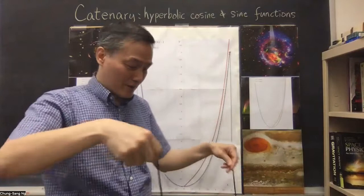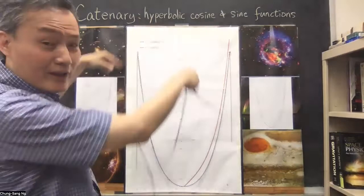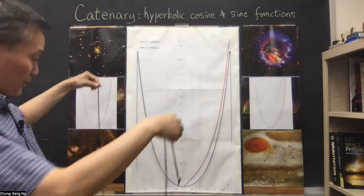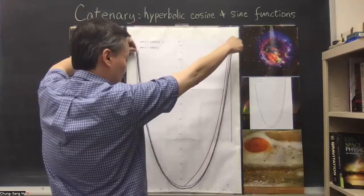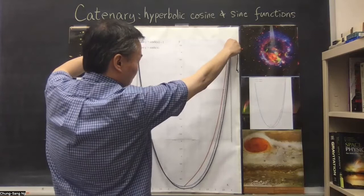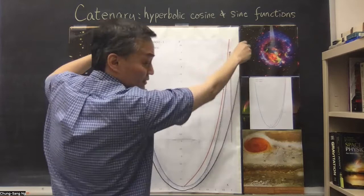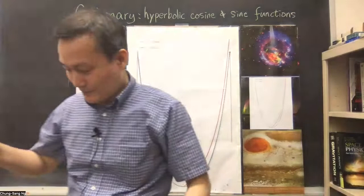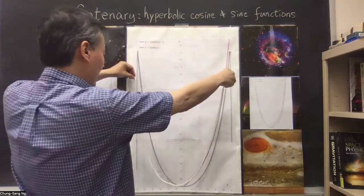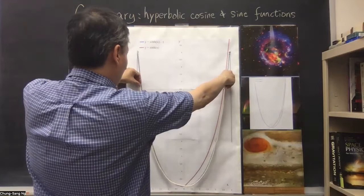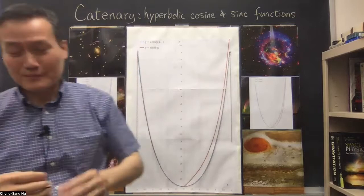You can still try a string — it gives a pretty good, close enough result for the demonstration, especially if you print it out large enough. For a smaller printout it might not work as well because of the curvature issue. If you try the string on here, you can see that by adjusting the length a little bit, the string is still very much on top of the cosh function.